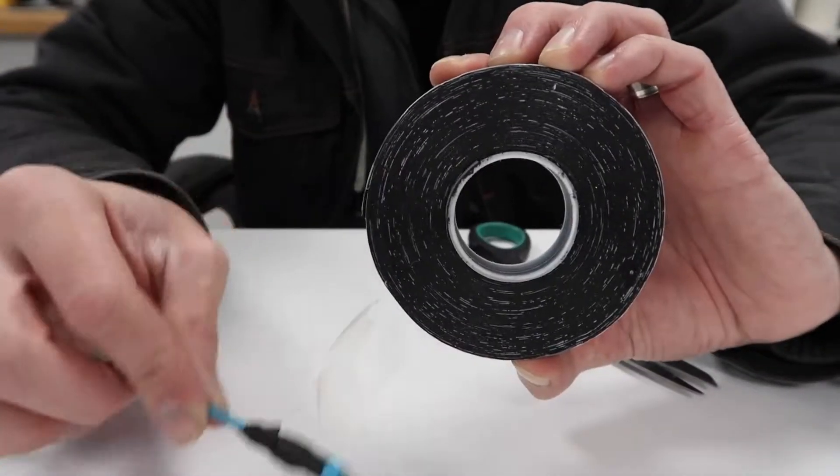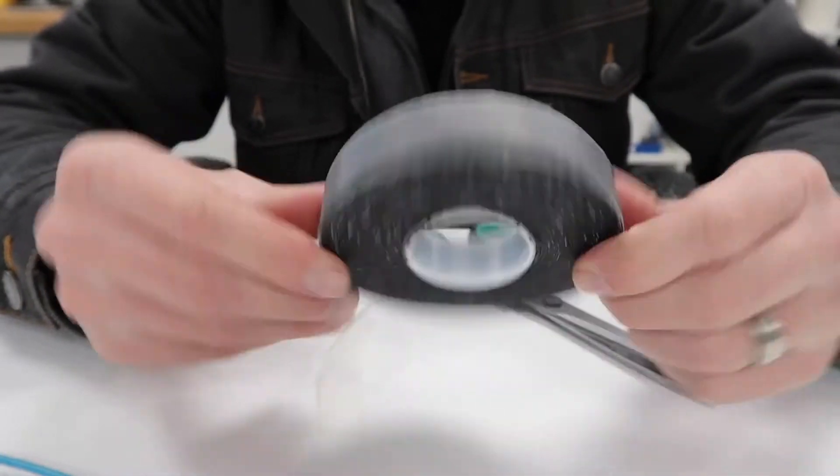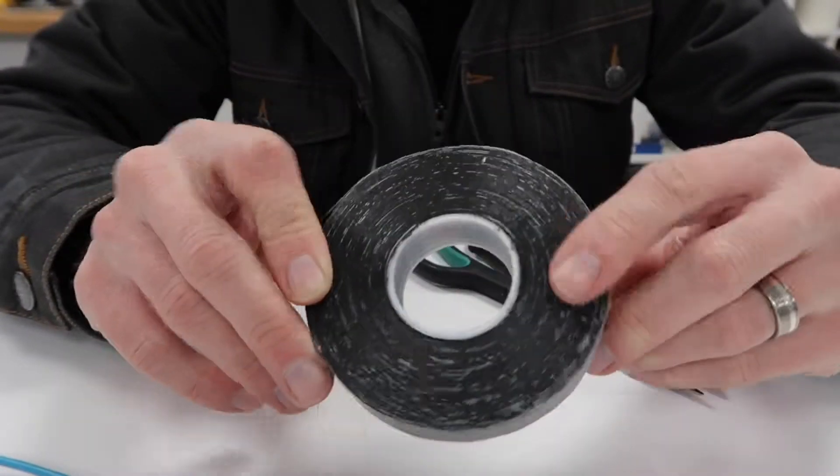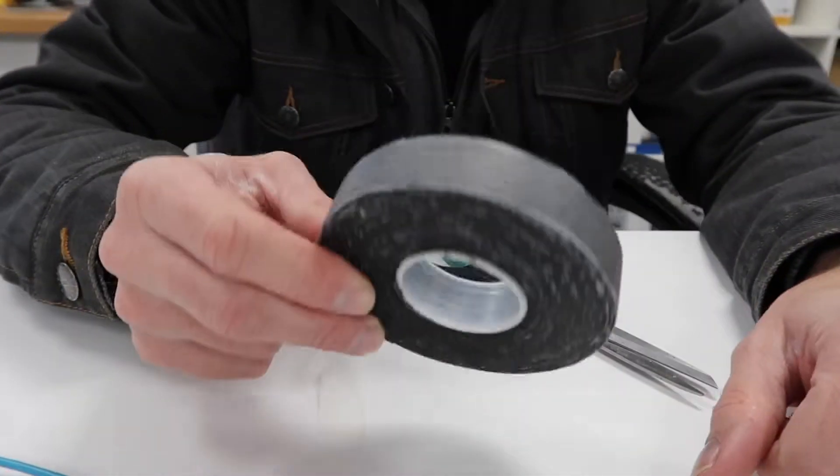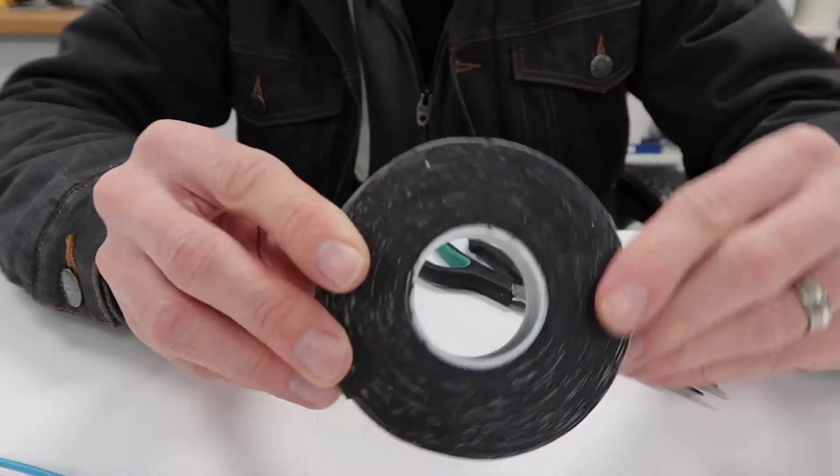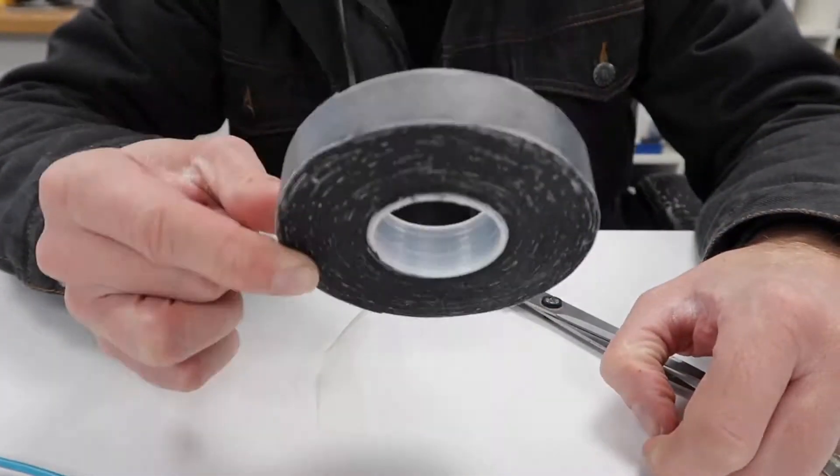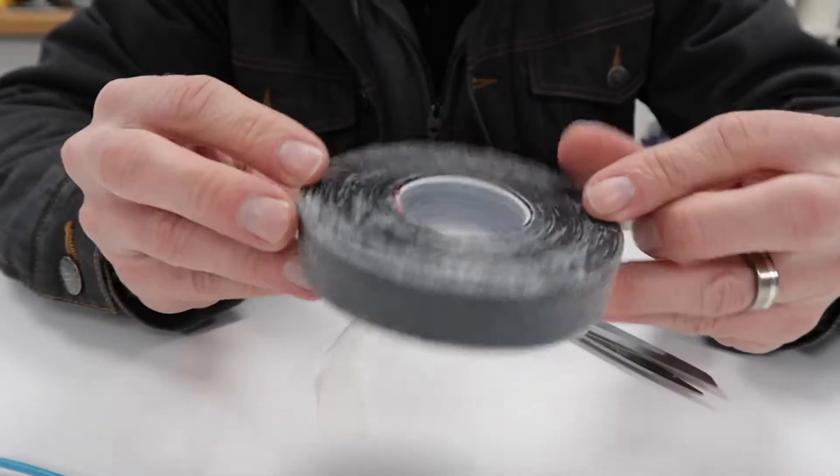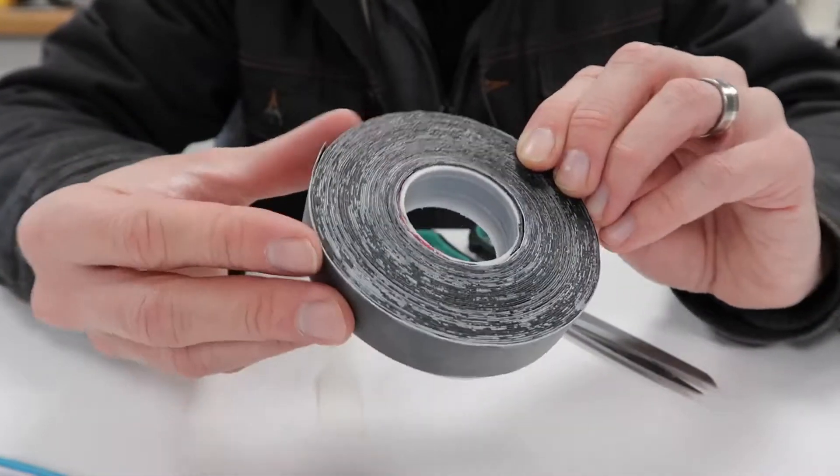You can pick up self-amalgamating tape or self-fusing tape or self-vulcanizing tape for about three pounds. I don't know how many US dollars but you can pick this up from your hardware store, hardware shop if you're in the UK, somewhere like Screwfix. You could either go to your local aerial satellite installer. They'll definitely have this stuff because this is the stuff that they'll be using when joining cables outside to make sure that they're waterproof and weatherproof.